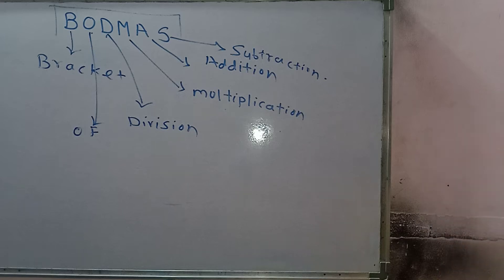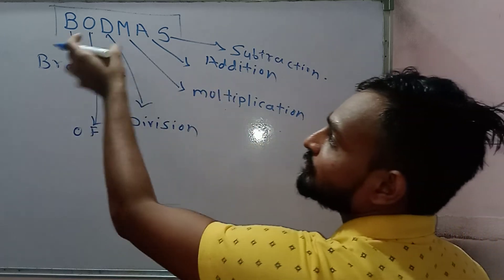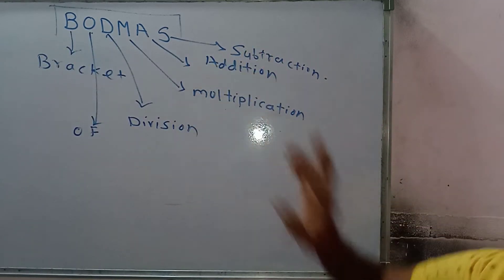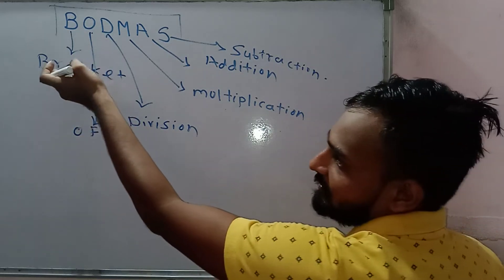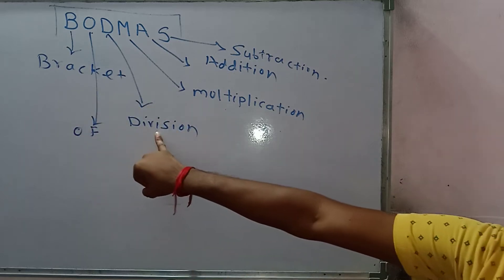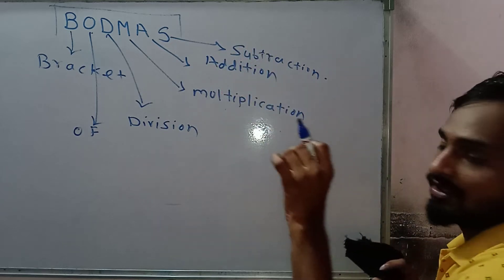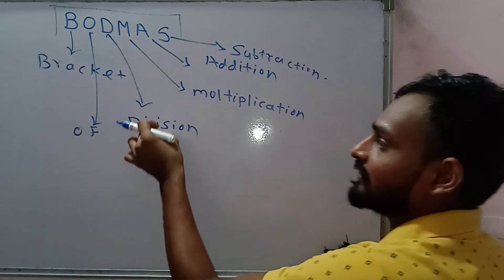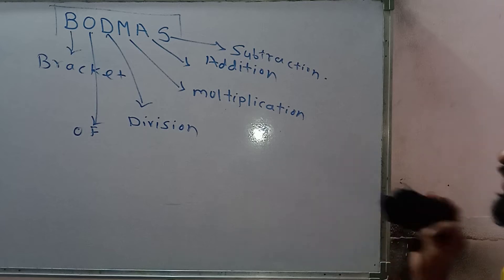So, if we are given some problem and we have to solve it, then we have to keep in mind that we have to go in this order: solve first Bracket, then Of, then Division, then Multiplication, Addition, and Subtraction. And if Bracket or Of is not present in the given problem, then we skip that part and go for Division, then Multiplication, Addition, and Subtraction. We have to go in this flow.